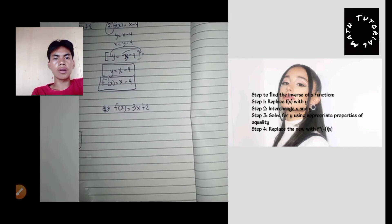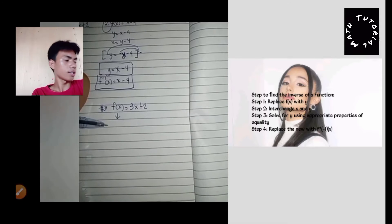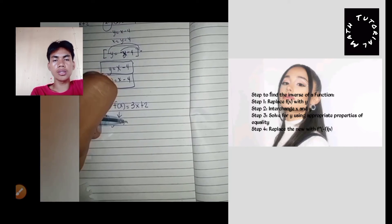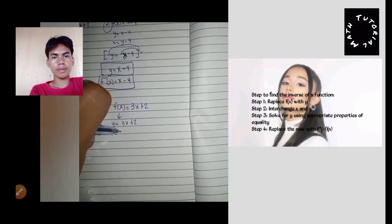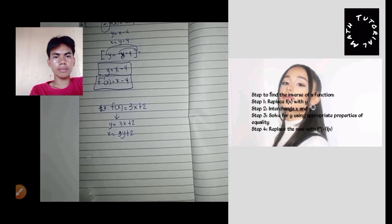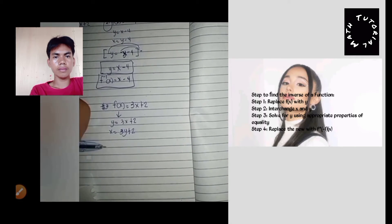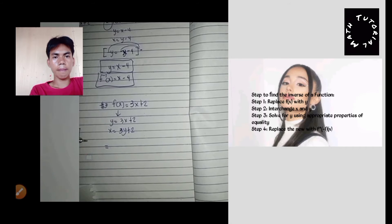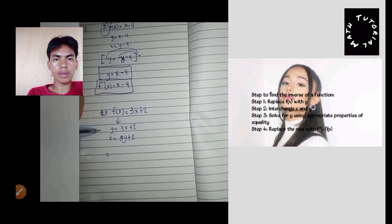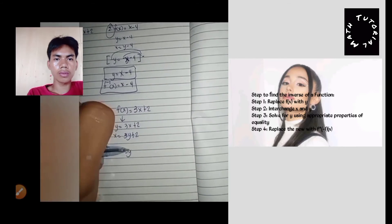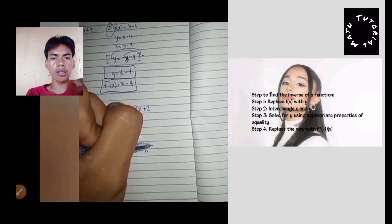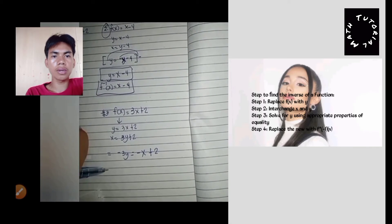The last example, number three: f of x is equal to 2x plus 2. You need to replace f(x) with y. Then you need to transfer the three y to the left side, so it converts into negative three y.